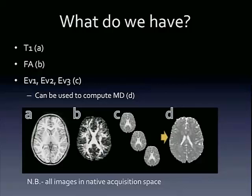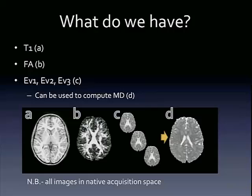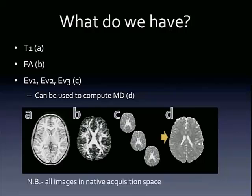What do we have from the data set? From this data set that we downloaded online, you're welcome to download it just as we did and do all your favorite cognitive measures and analyses. We have T1 data — a nice high-resolution structural scan, the kind of thing you're used to seeing in a structural MRI, shown in panel A. Next, we have an FA map shown in panel B. Finally, we have the three principal eigenvalues. You can take the mean of them to generate the MD map, shown in panel D.